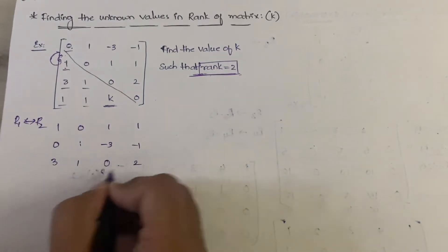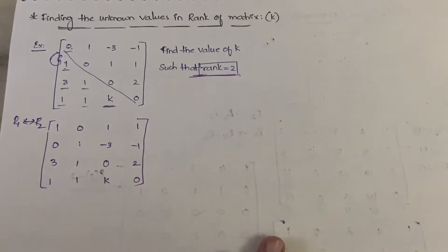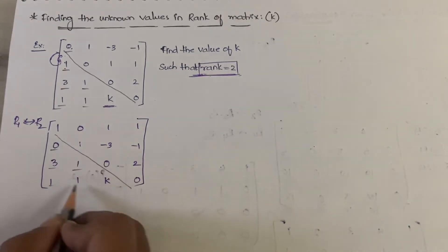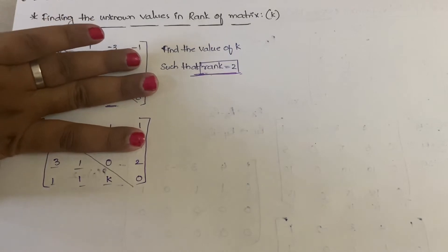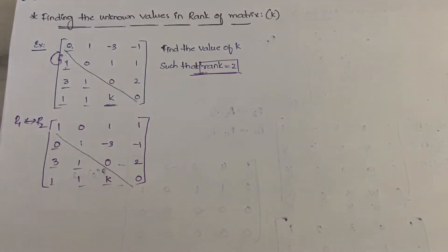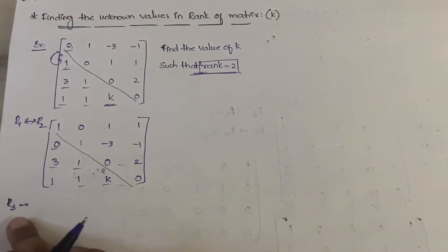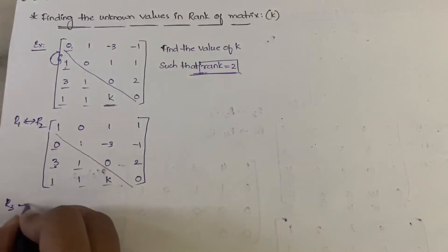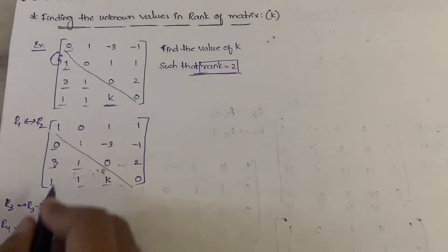Once you interchange R1 and R2 you get: R1 = [1, 0, 1, 1], R2 = [0, 1, -3, -1], and R3, R4 remain the same. Now applying transformations: R3 becomes R3 minus 3·R1, because 1 times 3 is 3, so 3 minus 3 gives 0. And R4 becomes R4 minus R1, since -1 minus -1 gives 0.